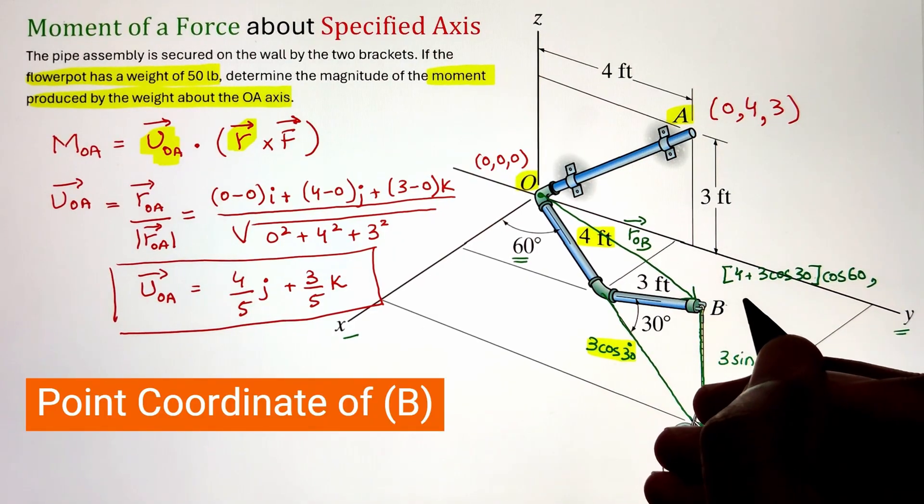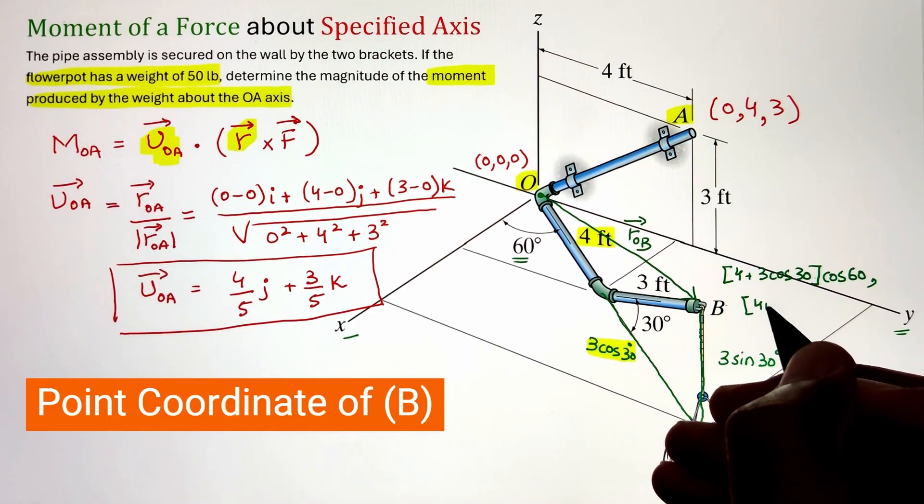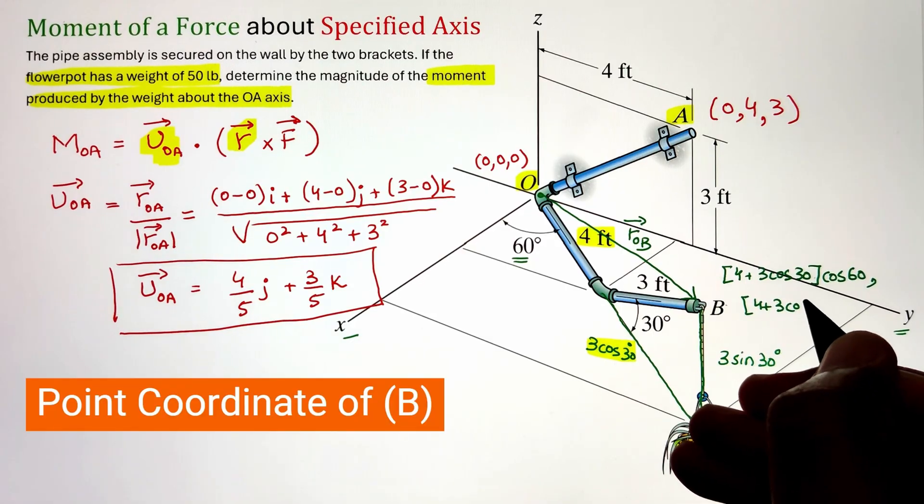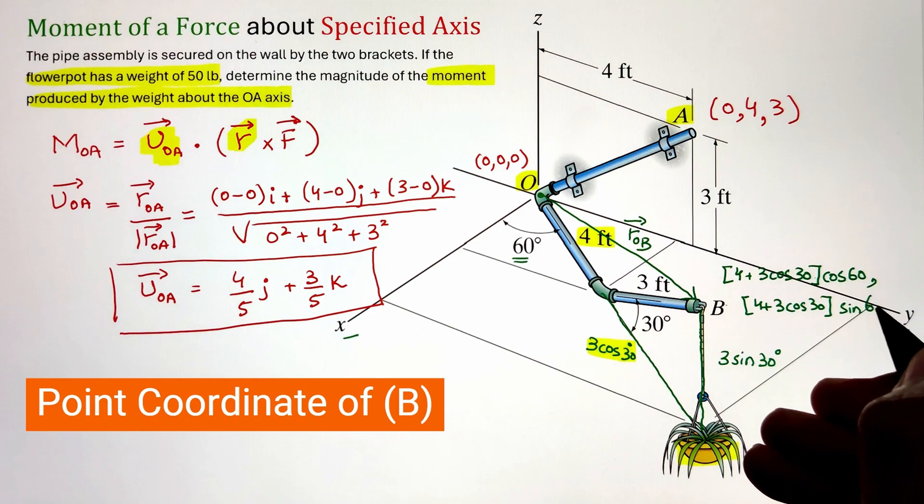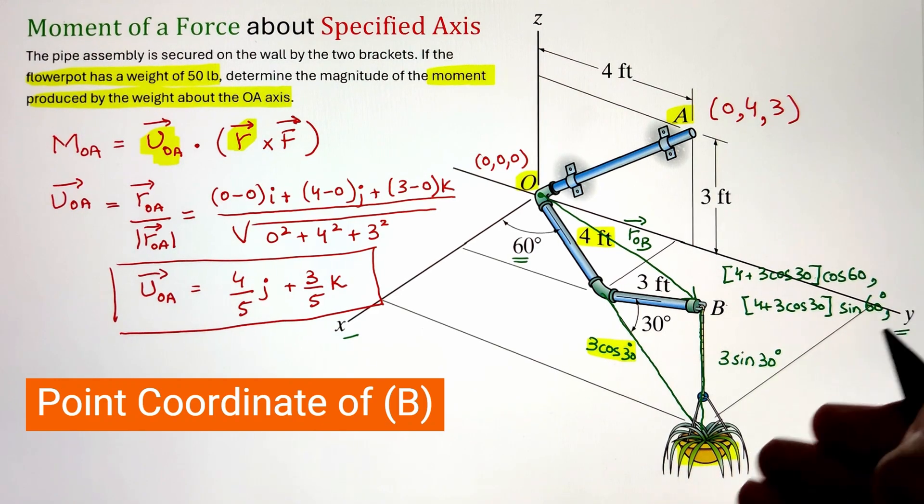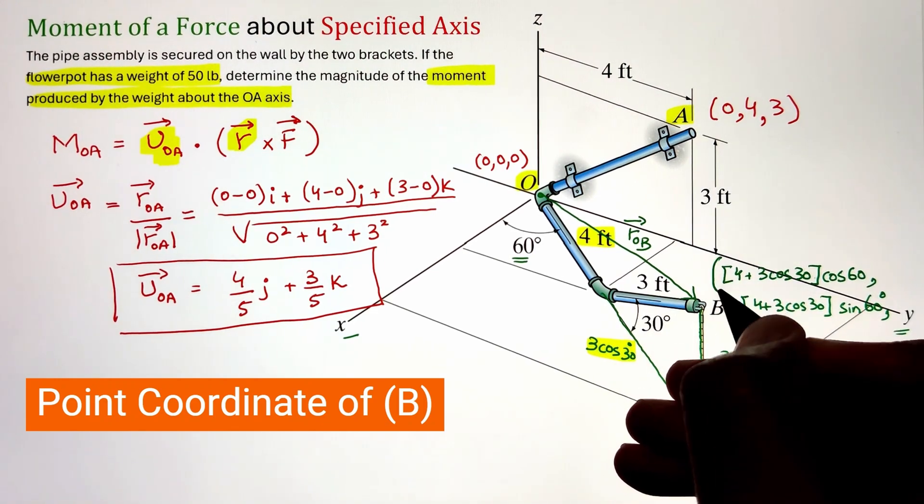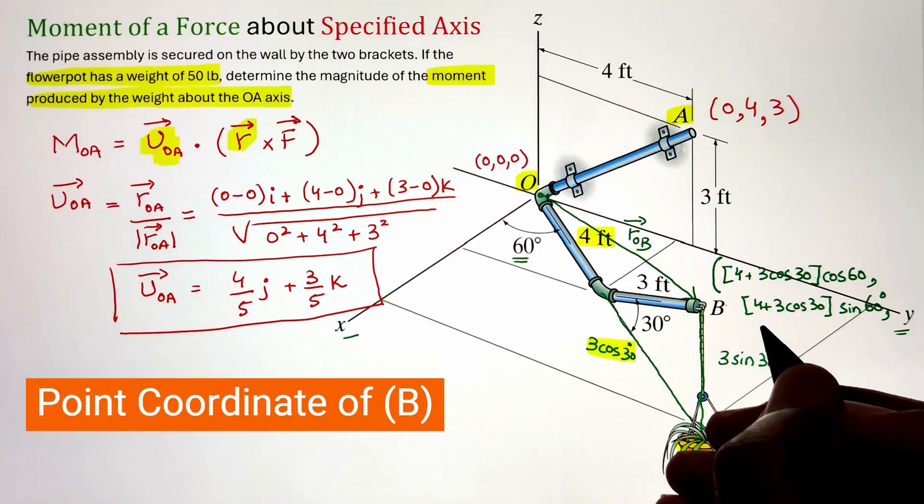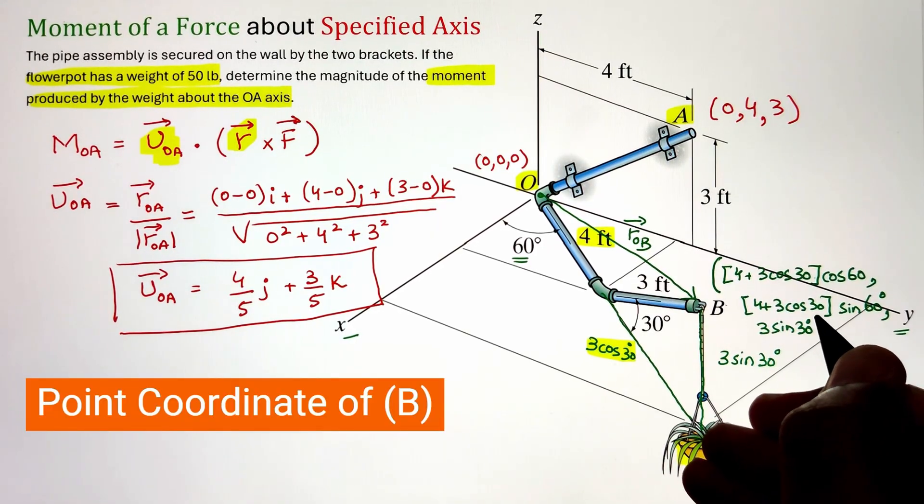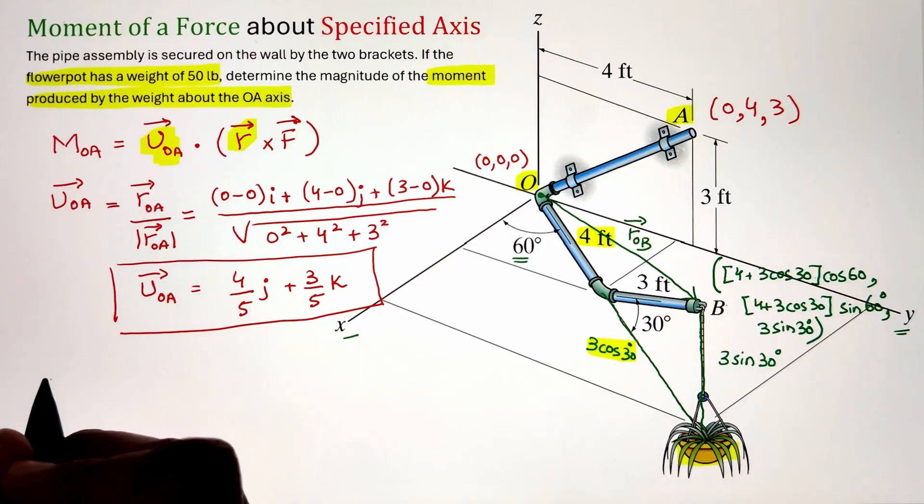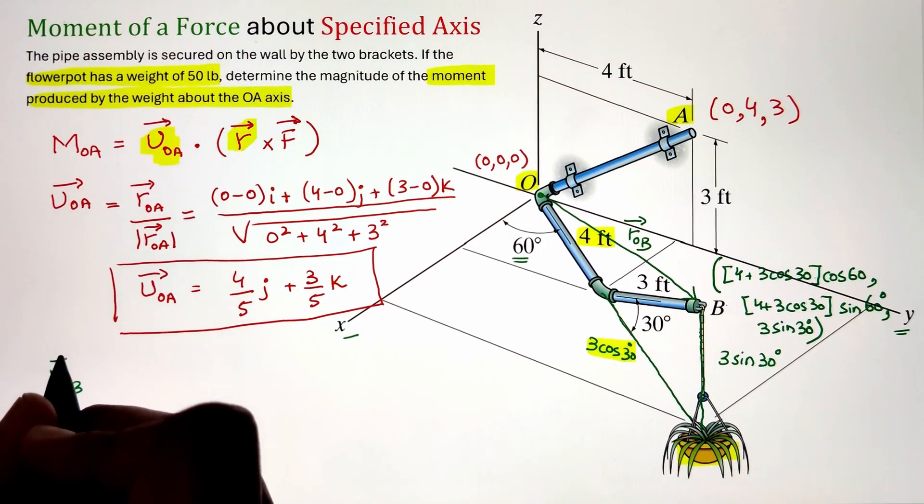Now in order to project this whole length along the X axis we can take the cos 60 function. This will be the X component of point B. Next we can take the sin 60 function of the same length and that will be the Y component of point B. Finally the Z component we have already calculated, that is 3 sin 30.